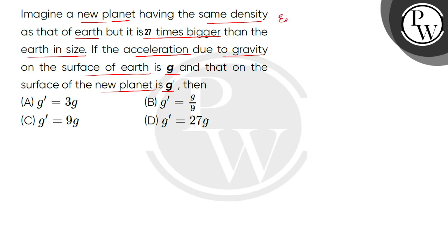So children, we have to consider the comparison of the new planet. Now the size of the new planet is 27 times bigger than the Earth means the volume of Earth is V, so this new planet will be 27 times V.